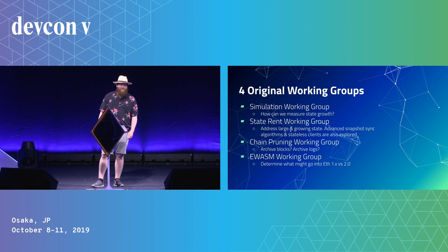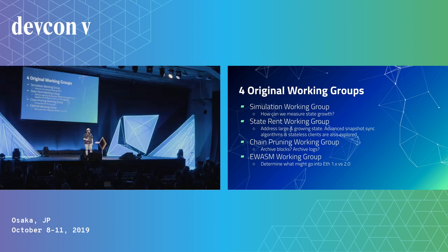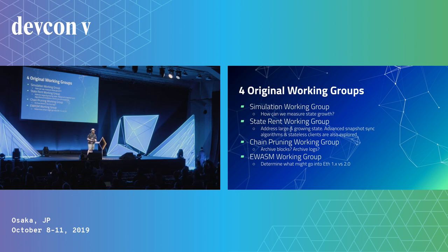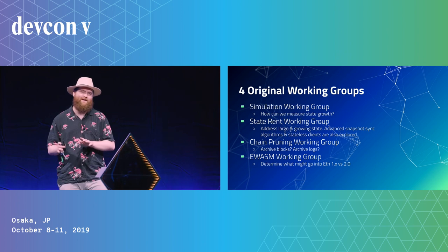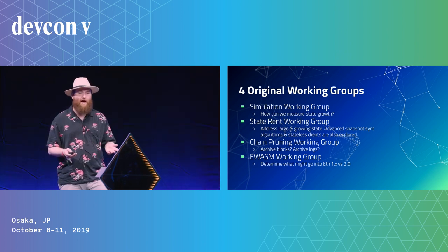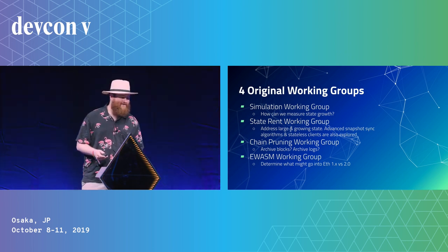We have chain pruning: can we archive blocks? Can we archive logs? How many of you here are DApp developers who use logs in your DApp — or who are using logs because they're cheaper storage than on-chain storage? That's exactly why we might need to archive logs. It was never explicitly said that logs would last forever. They're supposed to be for error messages and tracking certain things, but now that they're a cheaper way of storage, that's causing some state bloat. So can we archive those, or maybe make it so you have to fetch them from an external source?